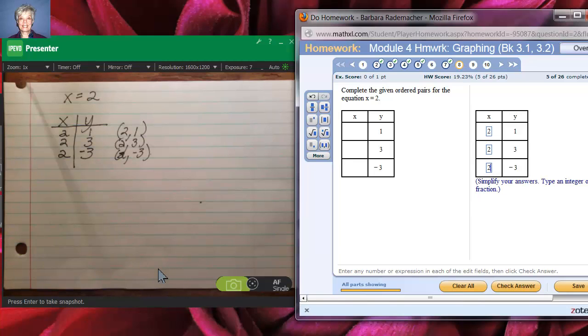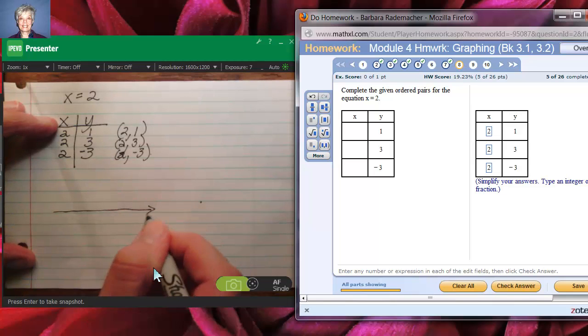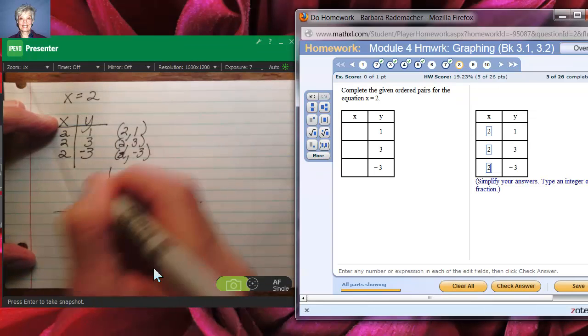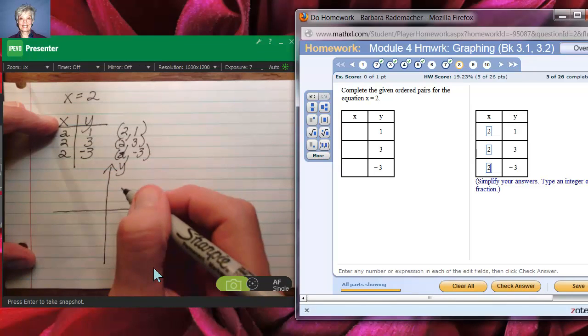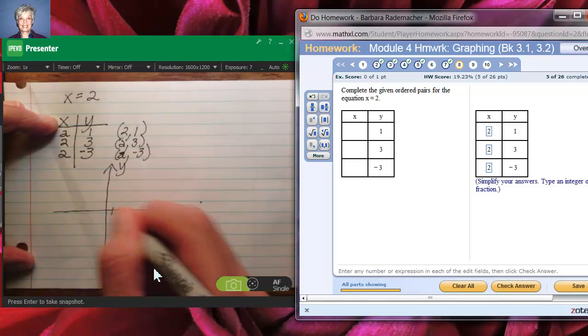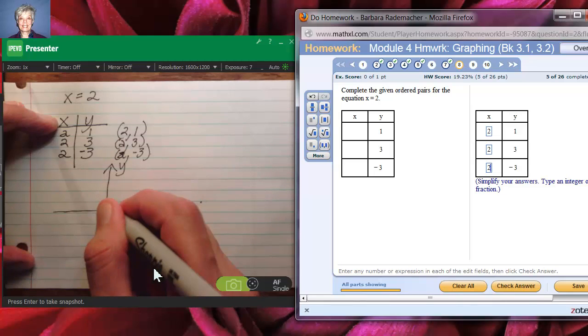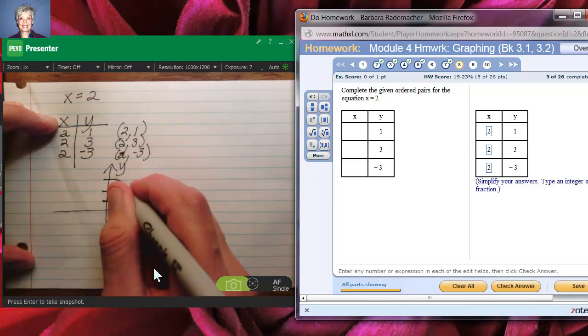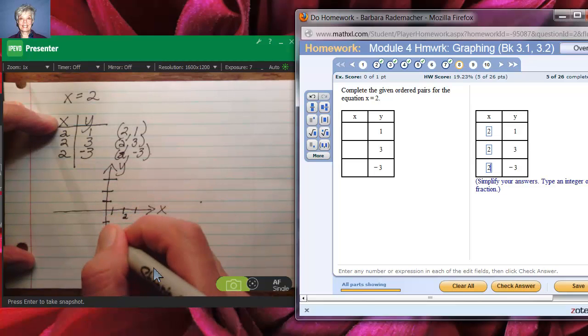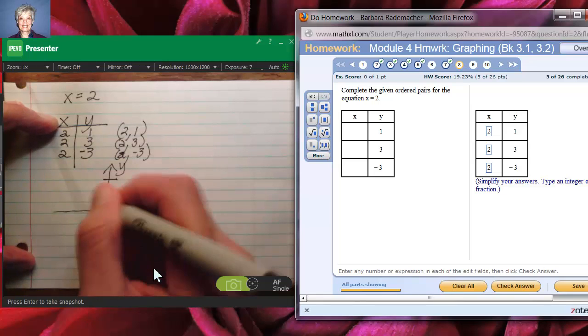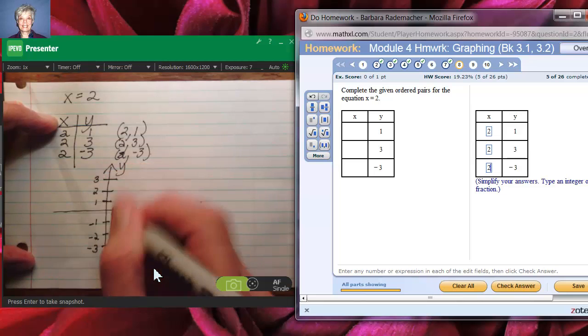Do you wonder what this looks like? Let me draw it for you. Here's the x-axis. Here's the y-axis. And here are the points 1, 2, and 3. And, I don't know, here are the points, not points, but scale. 1, 2, 3, negative 1, negative 2, negative 3. Okay. Negative 1, negative 2, negative 3, and 1, 2, 3. And this is 1, 2, and 3.